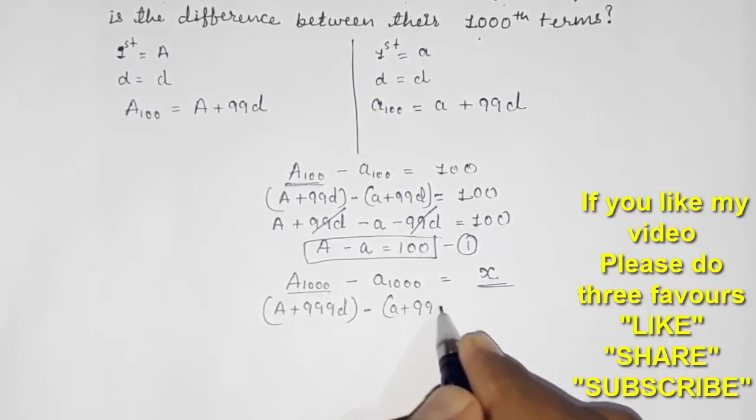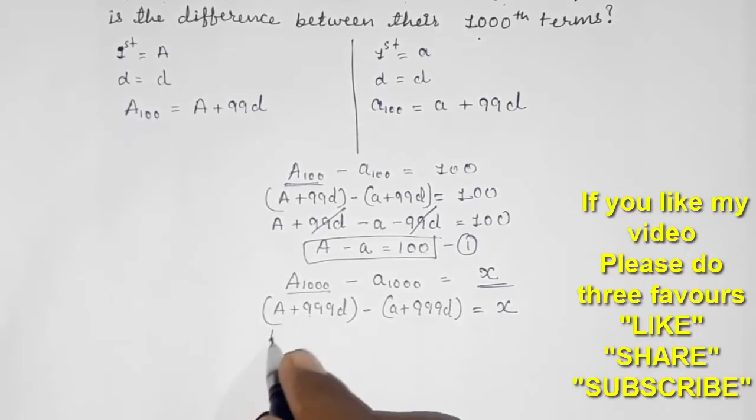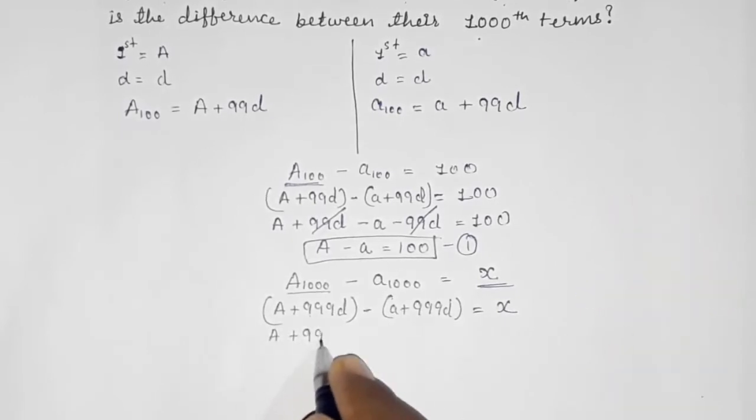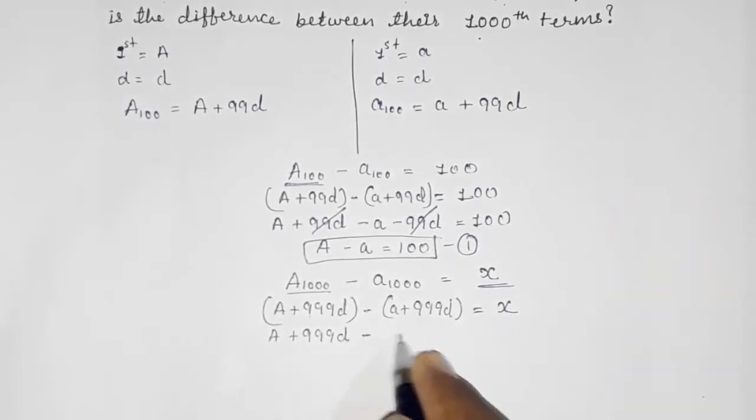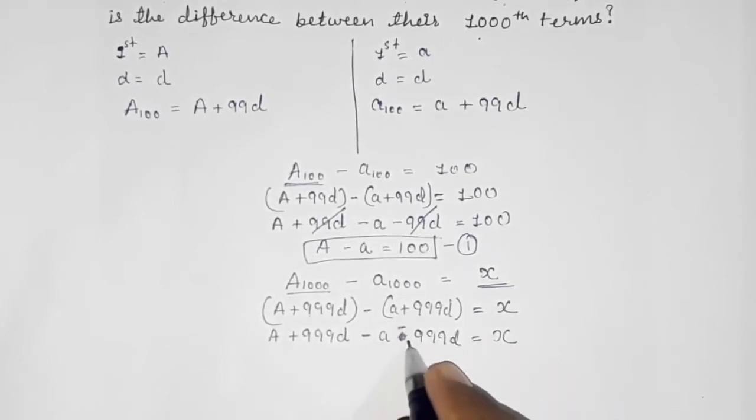Now A₁₀₀₀ term, that is A + 999d, minus here this a₁₀₀₀ is a + 999d. Now open the bracket: A + 999d minus... sorry, a minus, so that will be equal to x. I also made a mistake; you are going to make the same mistake, please note it.